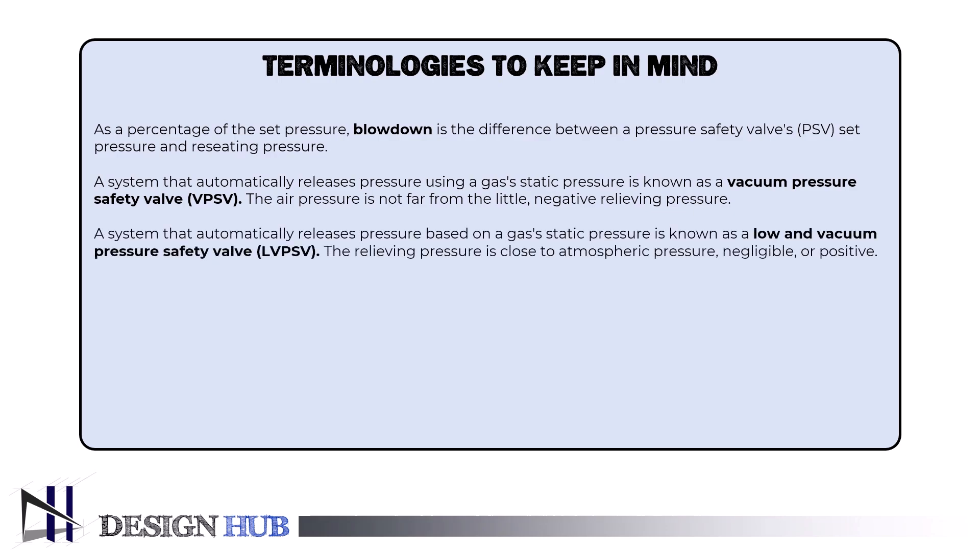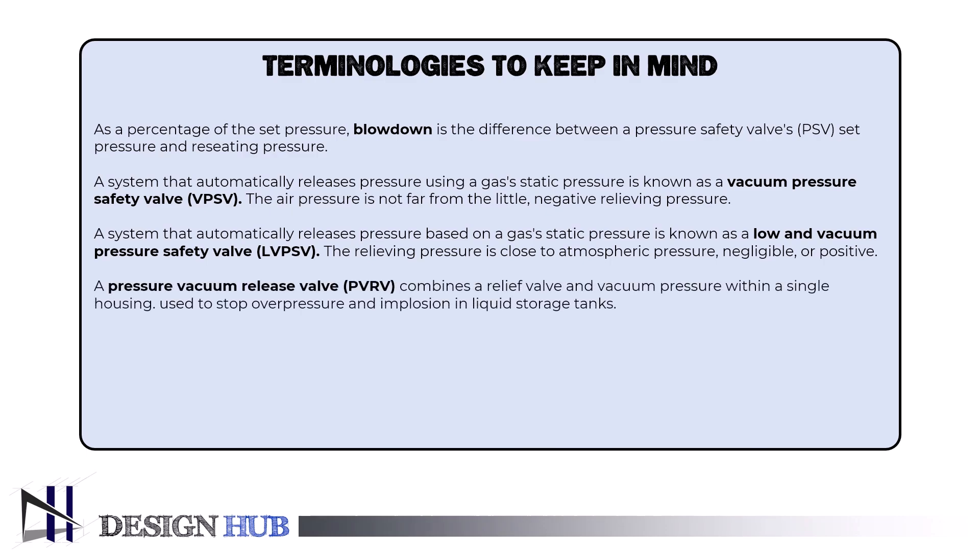Ninth is a low-end vacuum pressure safety valve, LVPSV: a system that automatically releases pressure based on a gas's static pressure, with the relieving pressure close to atmospheric pressure, negligible, or positive. Tenth is a pressure vacuum release valve, PVRV: combines a relief valve and vacuum pressure within a single housing, used to stop overpressure and implosion in liquid storage tanks.